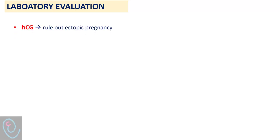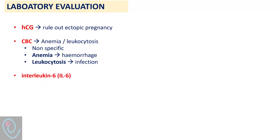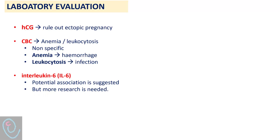During laboratory evaluation, perform HCG to rule out ectopic pregnancy. CBC may identify anemia or leukocytosis — these are non-specific findings but may indicate hemorrhage or infection. Some studies have suggested a potential association between increased levels of serum interleukin-6 and ovarian torsion, but more research is needed. If malignancy is suspected in the presence of an adnexal mass, serum tumor markers are required for further evaluation.